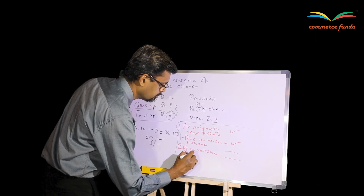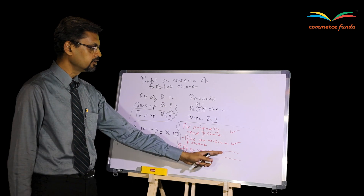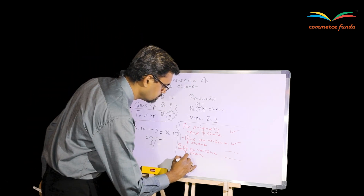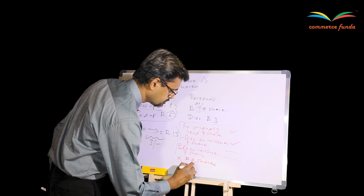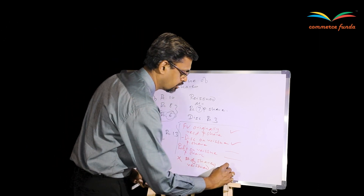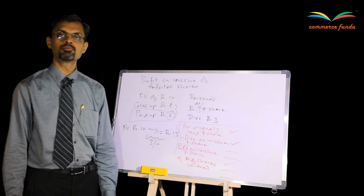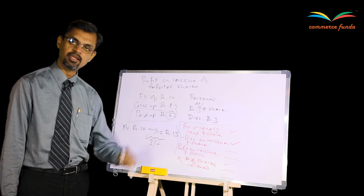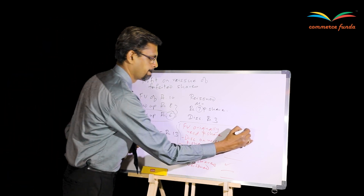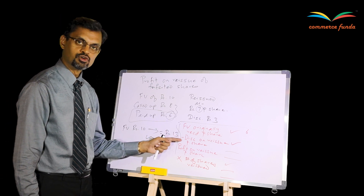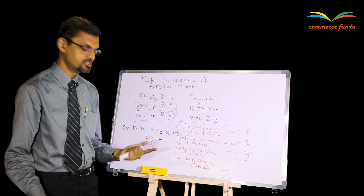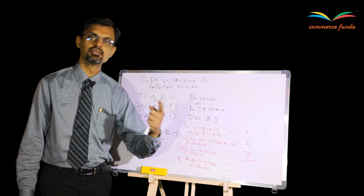This gives profit per share, and overall profit is profit per share multiplied by the number of shares reissued. Putting the same numbers into the equation: face value originally received per share is Rs.6, the discount passed on at reissue is Rs.3, so Rs.6 minus Rs.3 equals Rs.3 profit per share. Multiply that by the number of shares reissued to get total profit on reissue of forfeited shares.